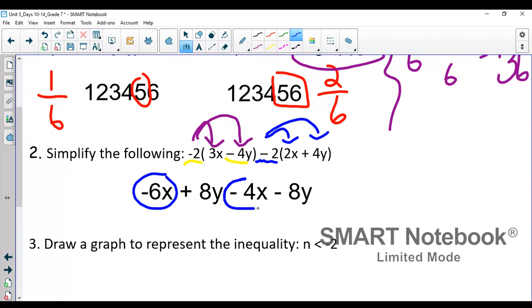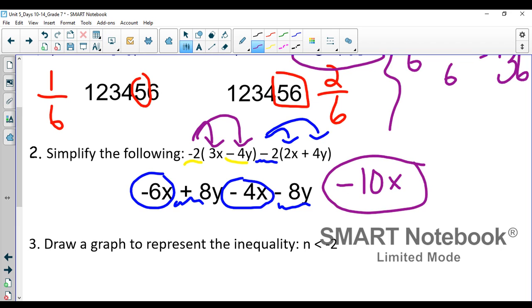Like terms X's, Y's. So you'll see there's no signs floating around. I know exactly what I need to do with everything. Negative six X minus four X gives us negative 10 X. Eight Y minus eight Y is nothing. So we're left with negative 10 X when we simplify this.